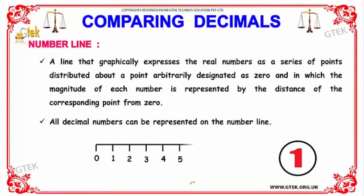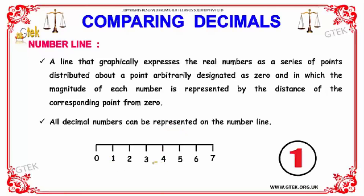Now let's talk about the number line. A number line graphically expresses the real numbers as a series of points distributed about a point arbitrarily designated as 0, where the magnitude of each number is represented by the distance of the corresponding point from 0.